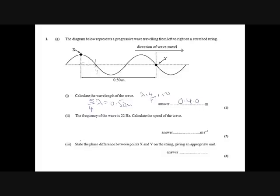Calculate the frequency of the wave is 22 Hz, so calculate the speed. This is a nice straightforward question as long as you've got the first bit right. This is c equals f lambda, so 22 hertz times 0.40 meters. No catches there, we get 8.8 meters per second. State the phase difference between x and y.